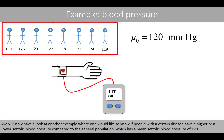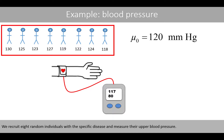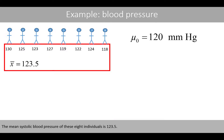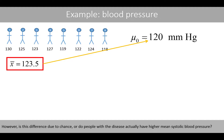We'll now look at another example where we want to know if people with a certain disease have a higher or lower systolic blood pressure compared to the general population, which has a mean systolic blood pressure of 120. The value mu-zero is therefore 120, our reference value. We recruit eight random individuals with the specific disease and measure their systolic blood pressure. We can use either a confidence interval or a one-sample t-test to answer this question, and we'll compute both.